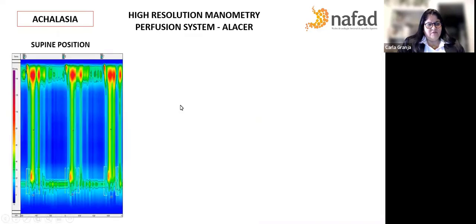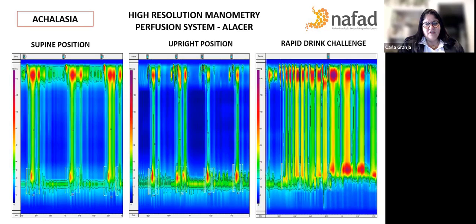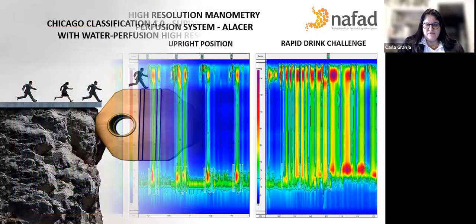In a patient with achalasia, we have pan-pressurization in supine position. Then it's the same thing that we see in the upright position, the alteration of the IRP over 16 and the pan-pressurization documented. And here is the image of the worse pressurization with a bigger volume of water in rapid drink challenge.